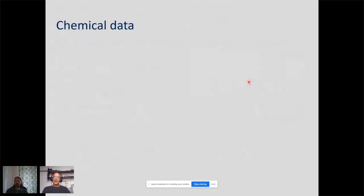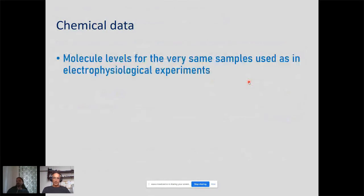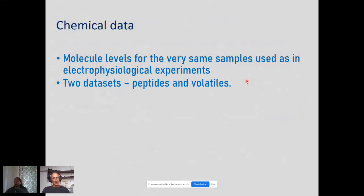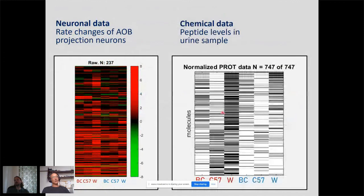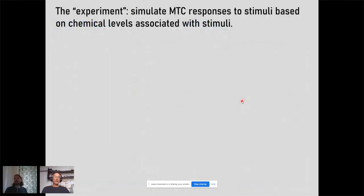The data overview shows a matrix of neuron responses where each column corresponds to one of the six stimuli and each row is one neuron showing firing rate changes. We also have a similar matrix for the peptide chemical data. The analysis we want to do is simulate neuron responses to these chemicals. The parameters of interest are the number of mitral tufted cells and the number of chemicals sampled by each mitral cell. The response is modeled as a linear summation — a graded response with no thresholding — given by the neuron's tuning function multiplied by molecule concentrations in each specific stimulus.